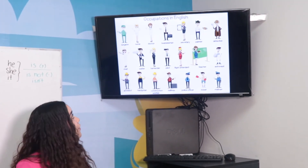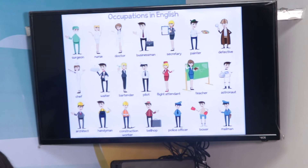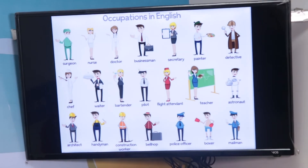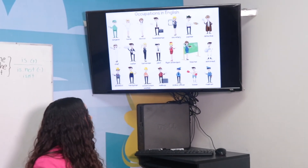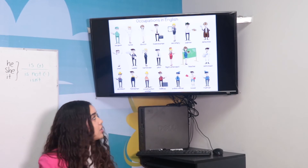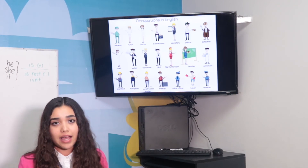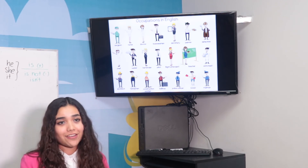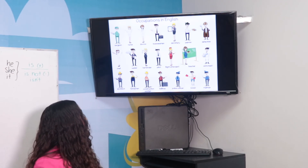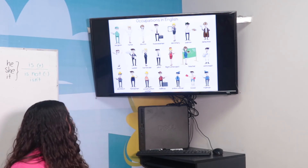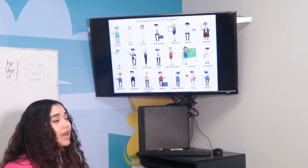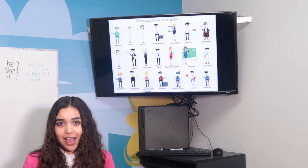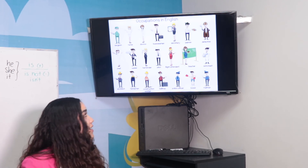For example, here we have a nurse. A nurse wears a white hat, a white blouse, white jeans, white shoes. Or for example, a teacher — she is wearing a white blouse, a blue t-shirt, and a blue skirt. And we also have a waiter — he is wearing black jeans, a black blazer, and a white blouse.